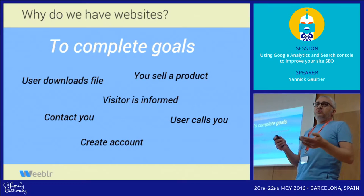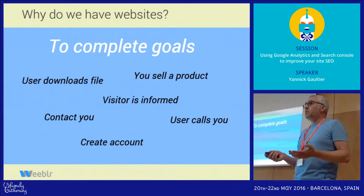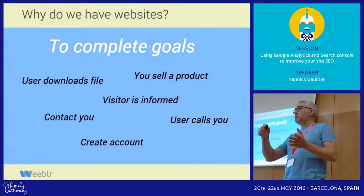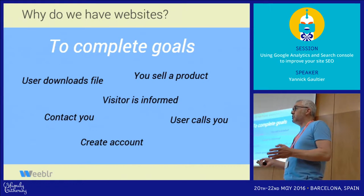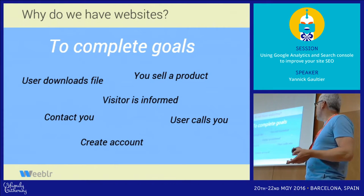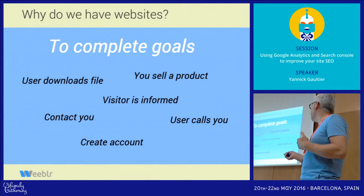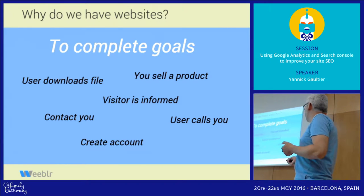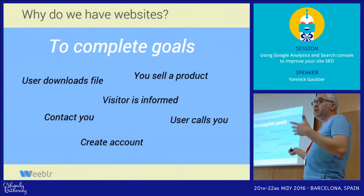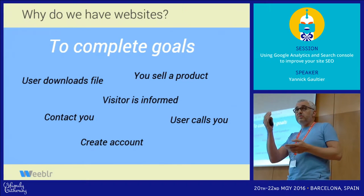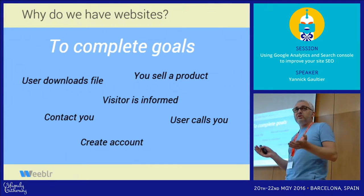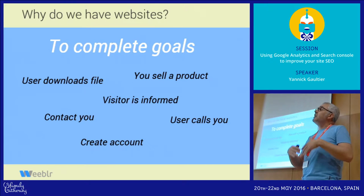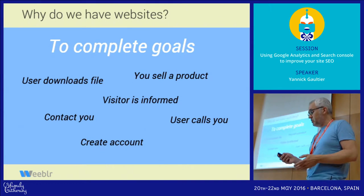Usually, the answer to why you have a website is because you want to complete some goals. Goals are very different from one company or individual to another: you want to sell products, have users download files, send out information, have them contact you, create accounts, or call you. Unless you do it for the love of Joomla, you have goals — there's something you want to achieve.